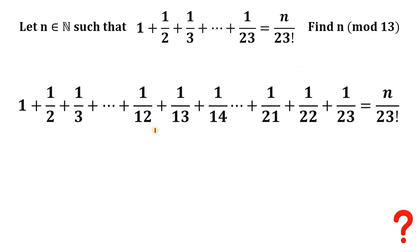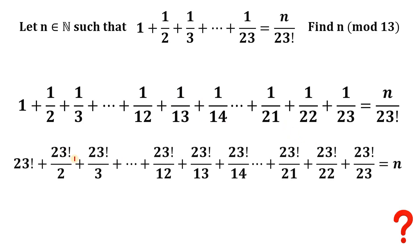Let's insert some terms: plus 1/12, plus 1/13, plus 1/14, and so on. Now we're going to multiply both sides by 23 factorial. We know 23 factorial is the product 1 × 2 × 3 up to 23. So 23 factorial divided by any term that has a factor of 13 gives remainder 0.